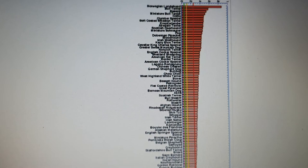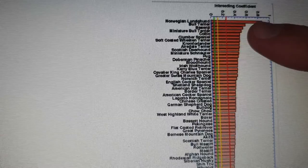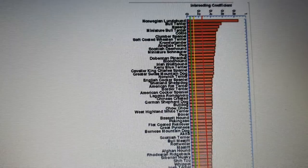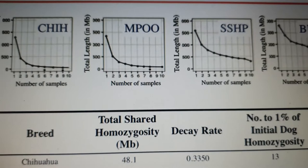The genetic diversity in the Bull Terrier is very limited — almost a 60% coefficient of inbreeding. The Norwegian Lundehund is even higher. Let's go back a little bit to an earlier slide.